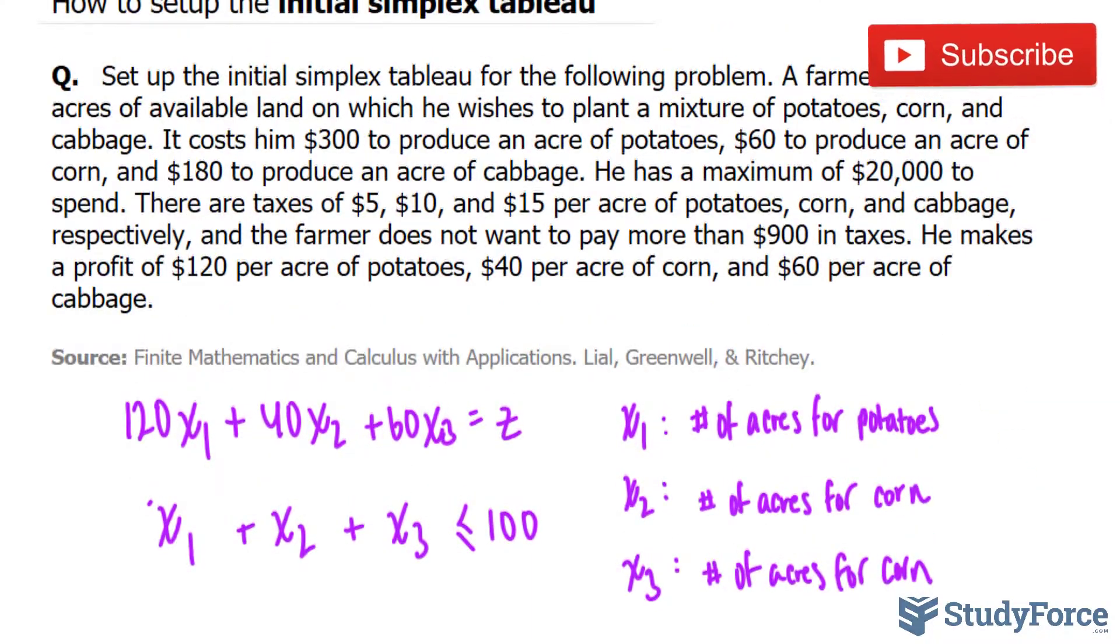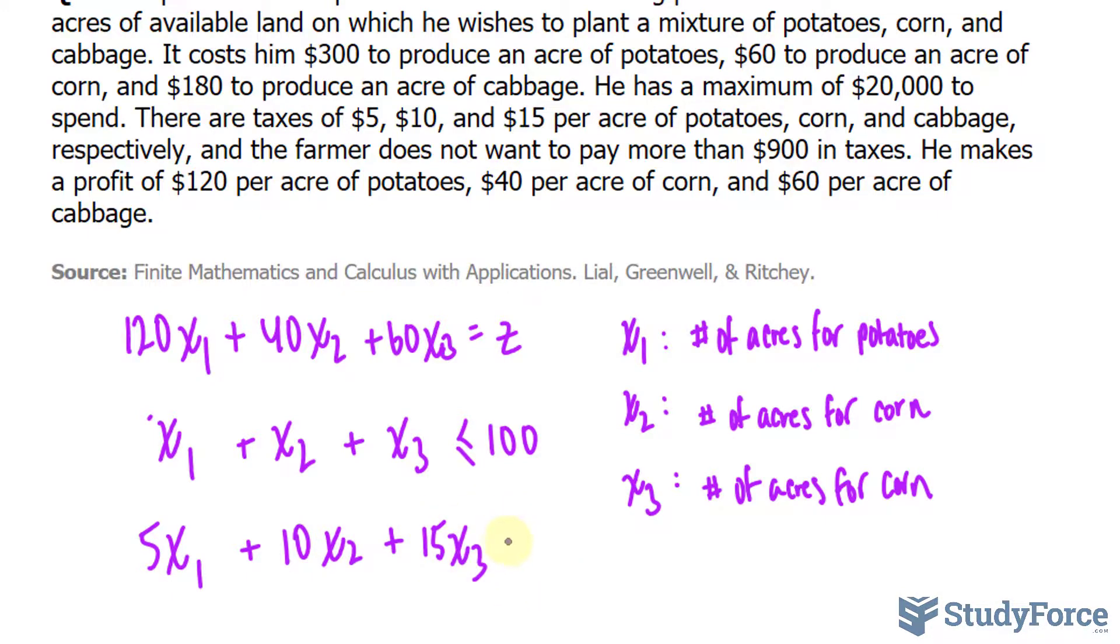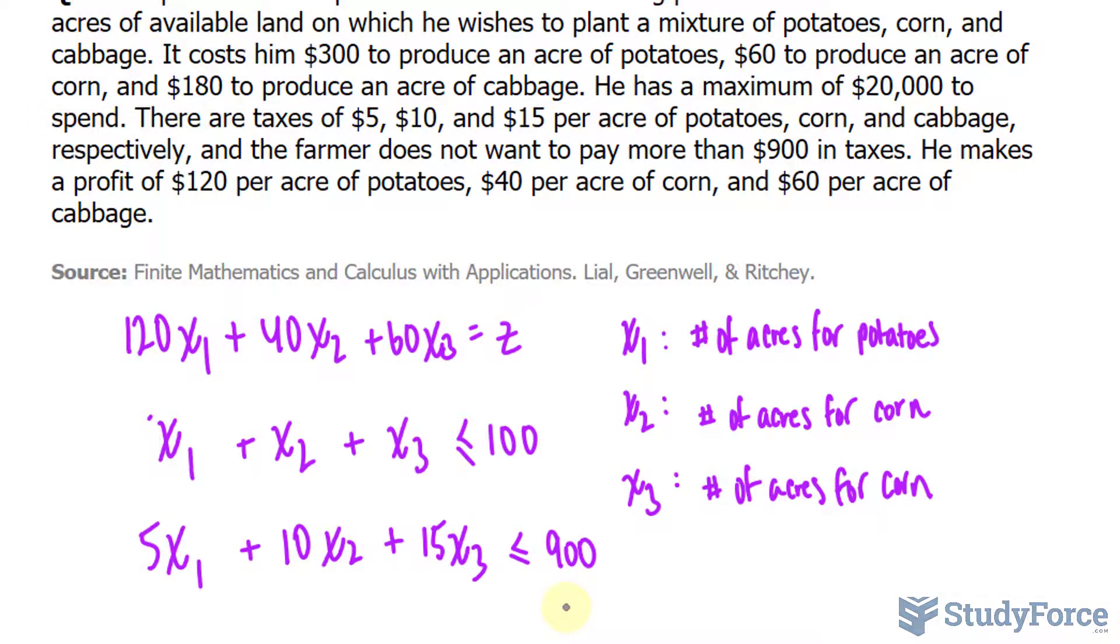In addition, the farmer does not want to exceed $900 in taxes. So we have 5 times the number of acres of potatoes, plus 10 times the number of acres of corn, plus 15 times the number of acres of cabbage, cannot exceed $900 in taxes.